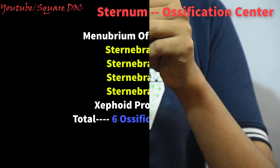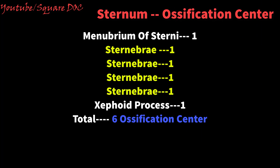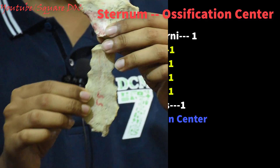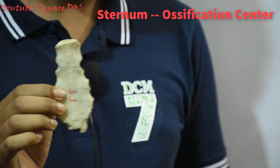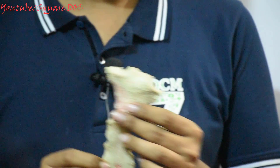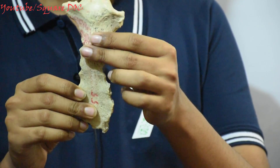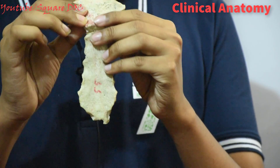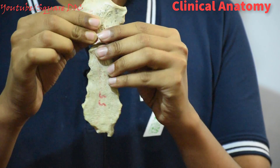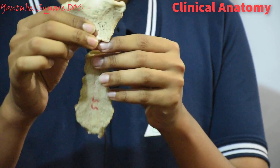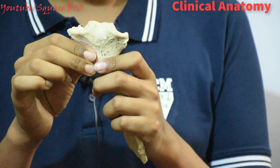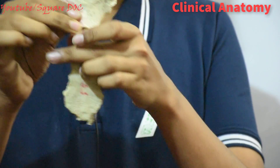So, the manubrium of the sternum and the body of the sternum — the xiphoid process makes four parts. Clinically, the manubriosternal joint forms an important landmark called the sternal angle.